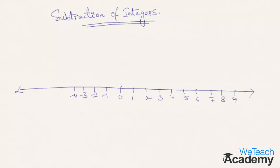Let's start off with a few examples which would easily make you understand the concept of subtraction of integers. The first example is 6-3. The first thing you need to do is mark the number 6 and then move 3 steps to the left on your number line, and wherever you stop would be the answer. In this case, 6-3 is 3.